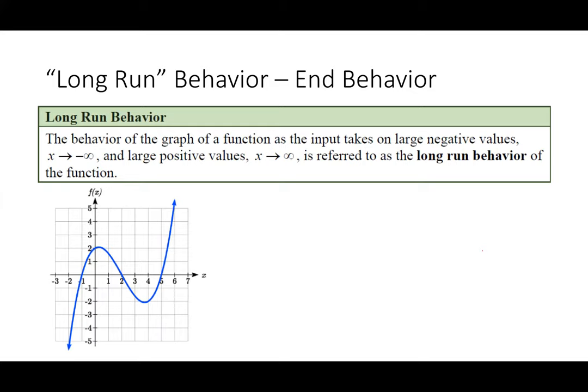So why is this vocabulary even helpful? Long run behavior is discussing what the arrows are doing in a polynomial graph. You're always going to have two arrows — a rightmost arrow and a leftmost arrow — and they always extend indefinitely. The domain of a polynomial will always be from negative infinity to positive infinity. Note that I'm not saying the range is always from negative infinity to positive infinity — that is not true, but the domain always will be.